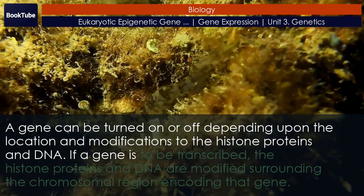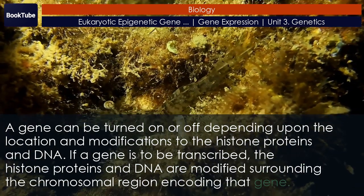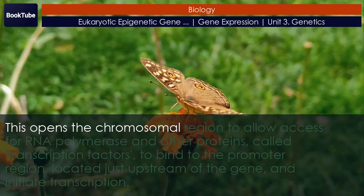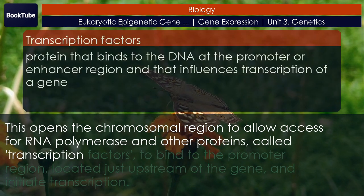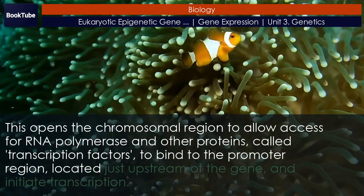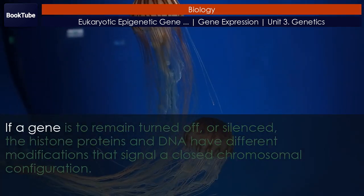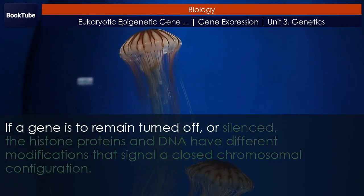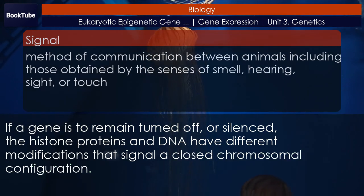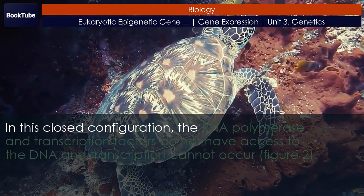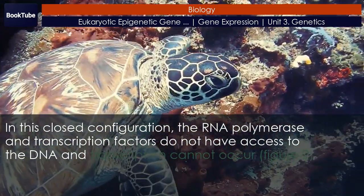If a gene is to be transcribed, the histone proteins and DNA are modified surrounding the chromosomal region encoding that gene. This opens the chromosomal region to allow access for RNA polymerase and other proteins called transcription factors to bind to the promoter region located just upstream of the gene and initiate transcription. If a gene is to remain turned off or silenced, the histone proteins and DNA have different modifications that signal a closed chromosomal configuration. In this closed configuration, the RNA polymerase and transcription factors do not have access to the DNA and transcription cannot occur.